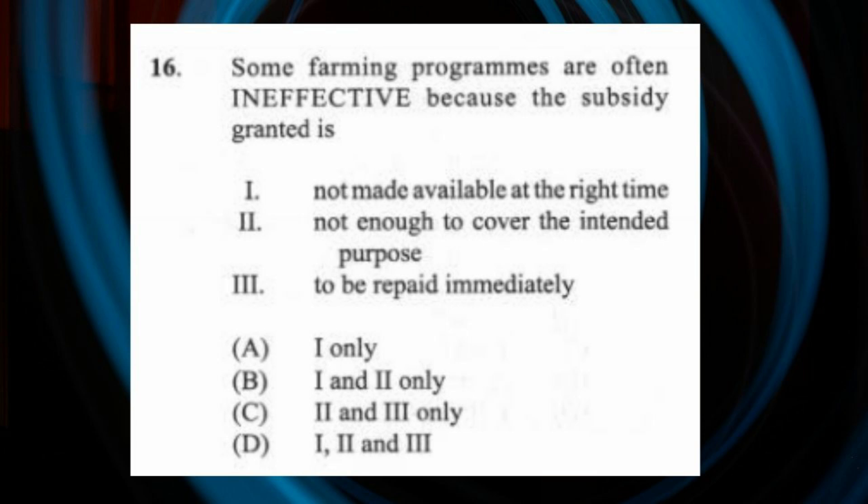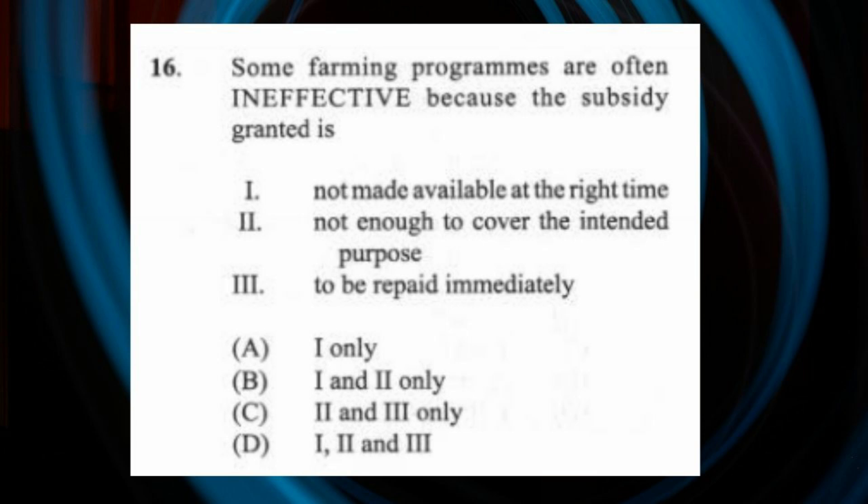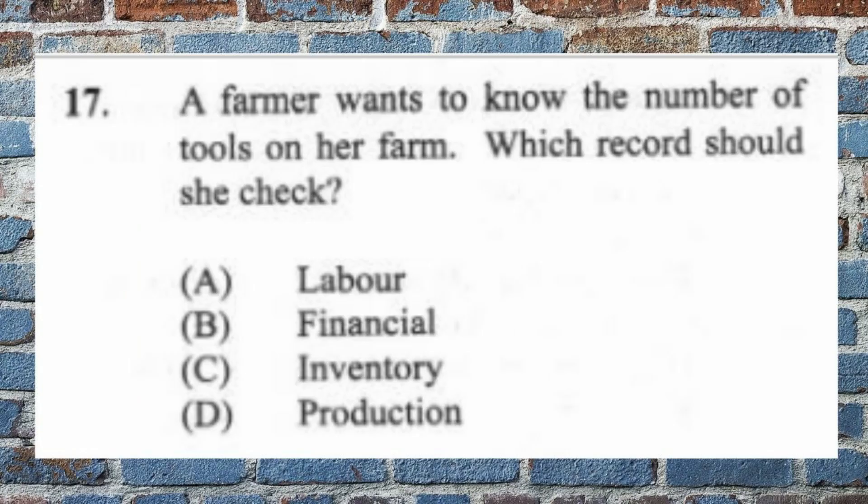Question 16: Some farming programs are often ineffective because the subsidy or grant is (1) not made available at the right time, (2) not enough to cover the intended purpose, (3) to be repaid immediately. The answer is B, one and two only. A subsidy is a grant from the government — money or items given to farmers — and once it is a grant, it does not have to be repaid.